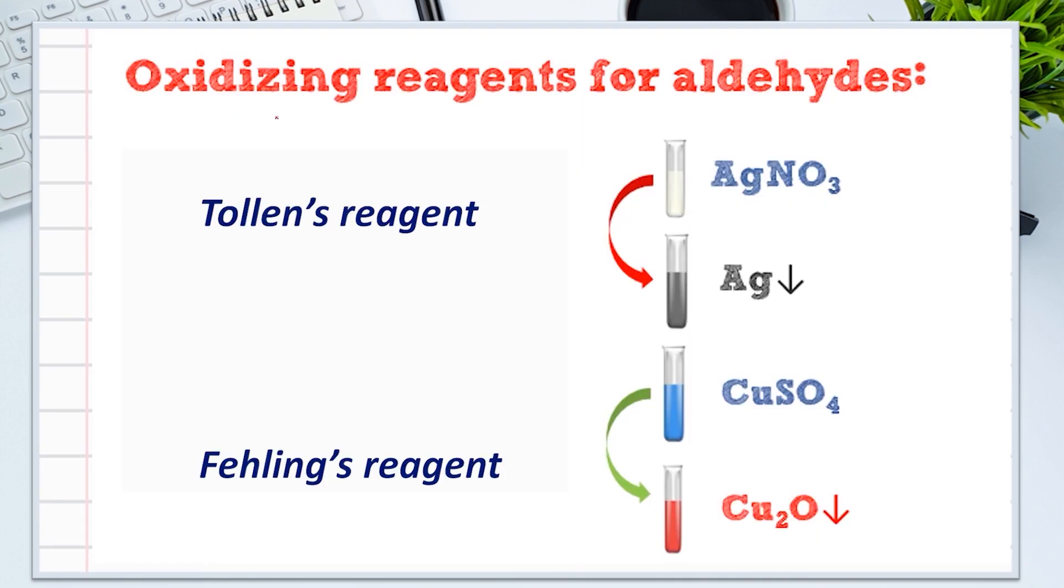Remember, we talked before about using Fehling's and Tollen's reagents to distinguish between aldehydes and ketones, where aldehydes were able to oxidize into carboxylic acids and the ketones, no reaction took place. You can click the above link or the link in the description of the video for more information.